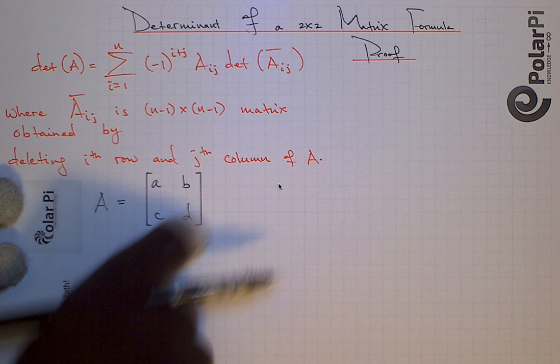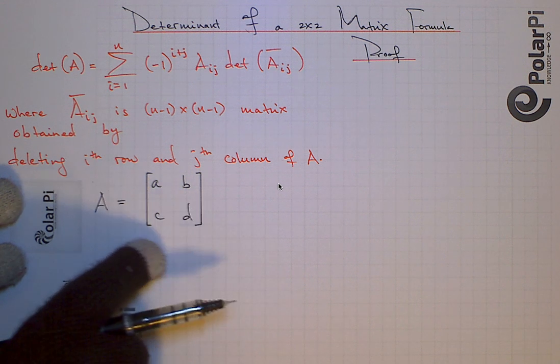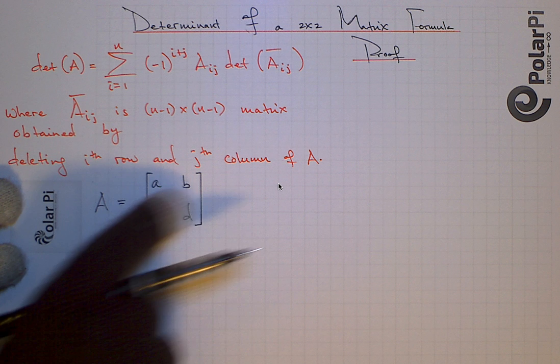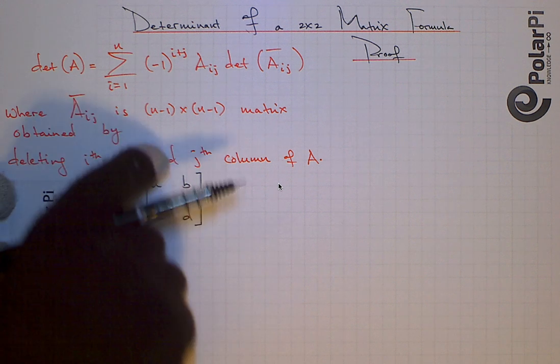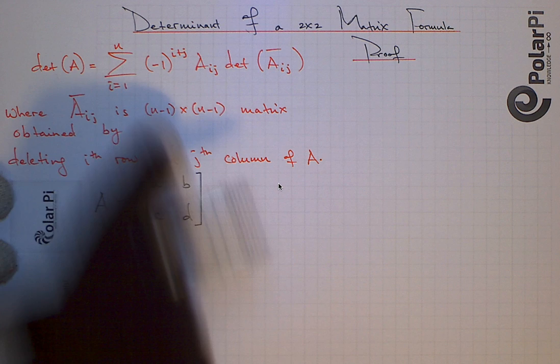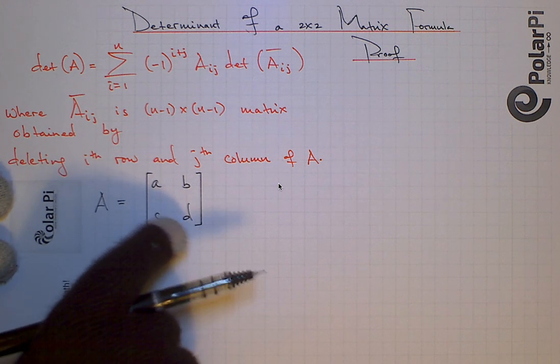We said that for a 2x2 written in this way, that the determinant is equal to A times D minus B times C. And in this video, I'm going to show you that the definition of the determinant for any n-by-n here will lead us to exactly that formula.